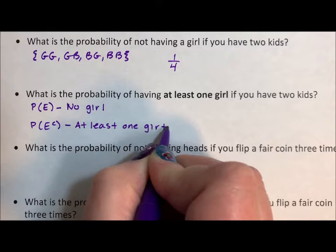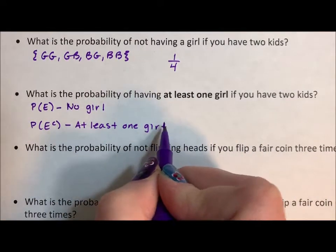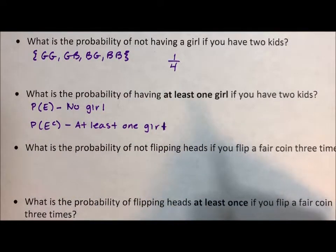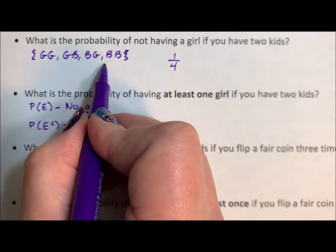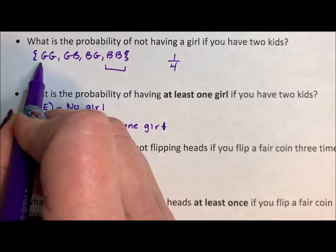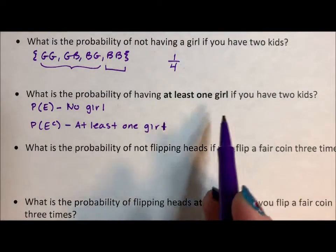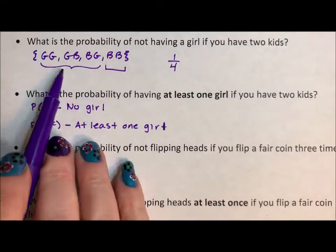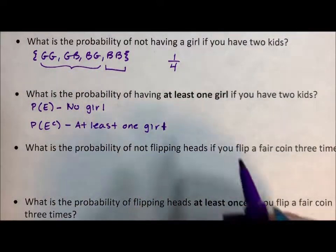Because an event and its complement have to equal the whole sample space. So if this is my event, this has to be the complement. So at least one girl has to be everything else in the sample space.